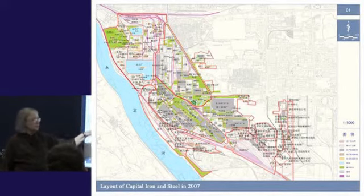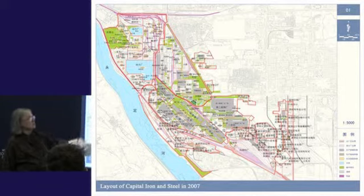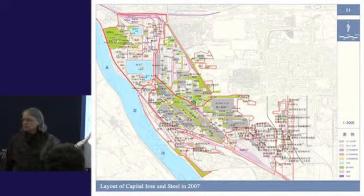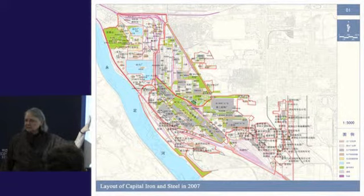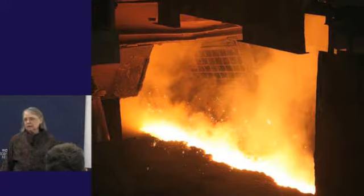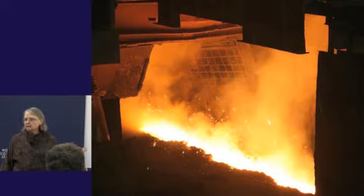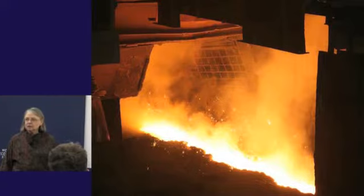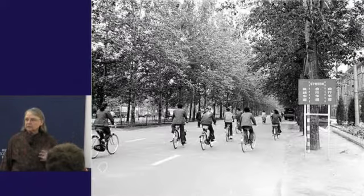Now we're back to Beijing and this is the Capital Iron and Steel area. We see the reservoirs that they've had. Most of these buildings have been torn down or are in the process of being torn down. They're moving this whole plant — really a small city in itself — up to another part of China. One of my students took this picture in the actual plant before it was closed down, showing the iron and steel. We can see some very important things happening in the city that are affecting what is being transported in.